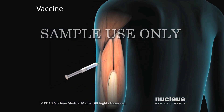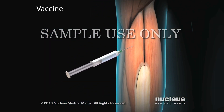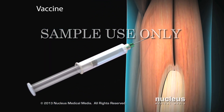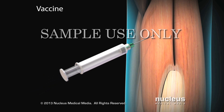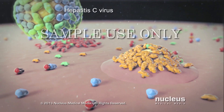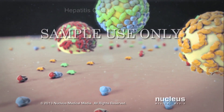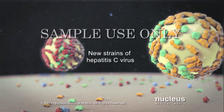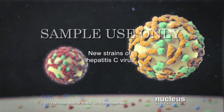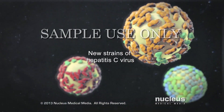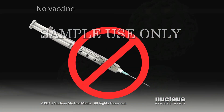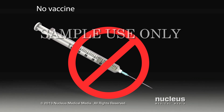A vaccine contains weakened or inactive viruses that train your immune system to recognize and attack certain viruses. However, frequent mutations in the hepatitis C virus make it likely that you will catch a version of the virus not contained in a vaccine. As a result, there is no effective vaccine for the hepatitis C virus.